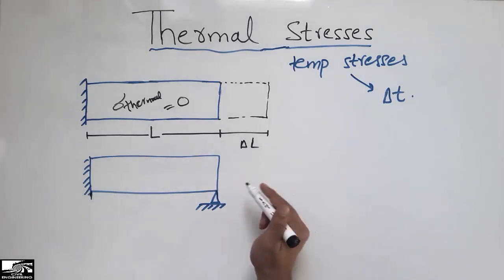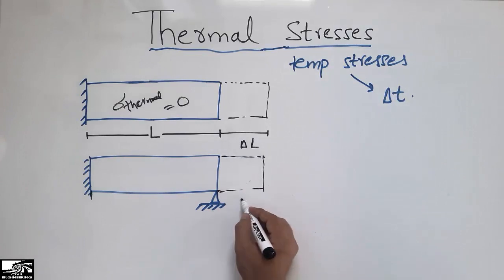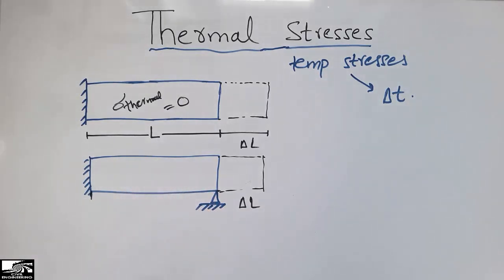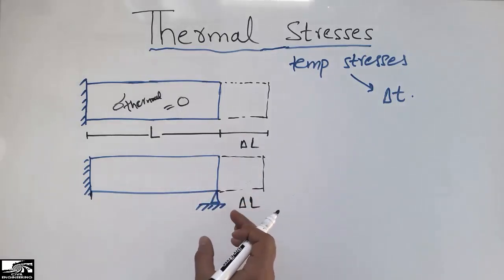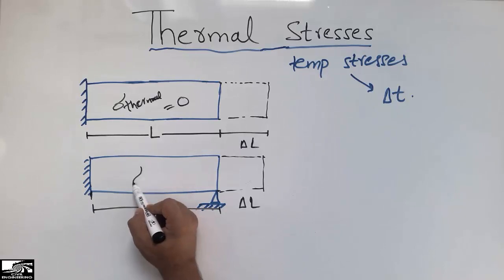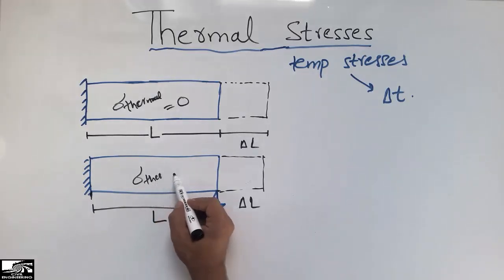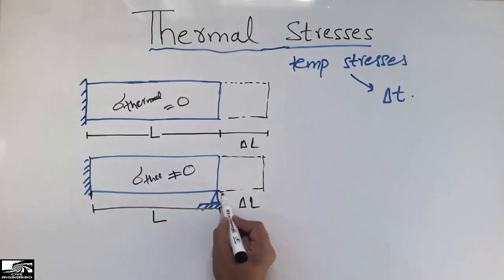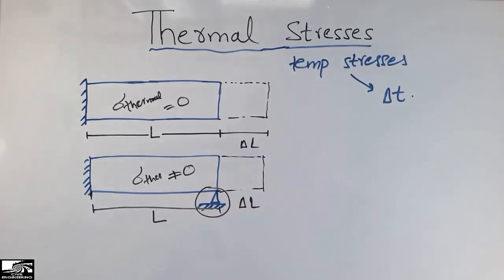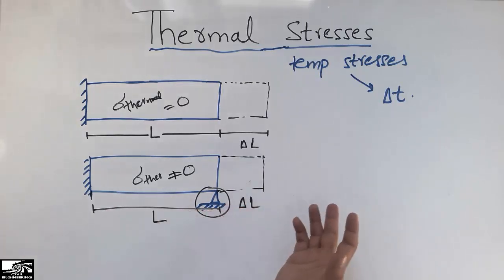Due to the increase in temperature, the length would naturally increase by delta L. But in this case, there is a restraint provided to the object on the right side, so stresses are created. We call these thermal stresses because they occur due to the change in temperature. The thermal stress is not equal to zero here because we have a restraint. The object must be restrained to produce thermal stresses, and these stresses increase with greater temperature change.